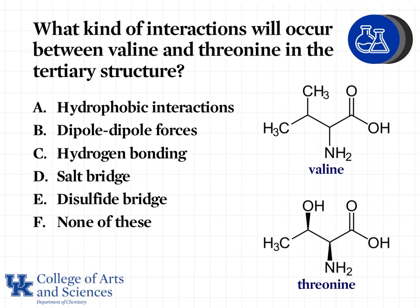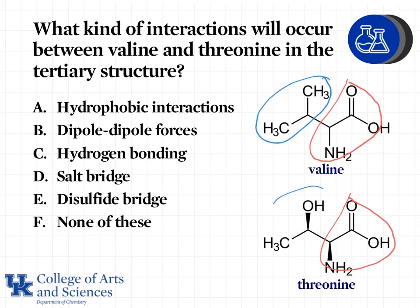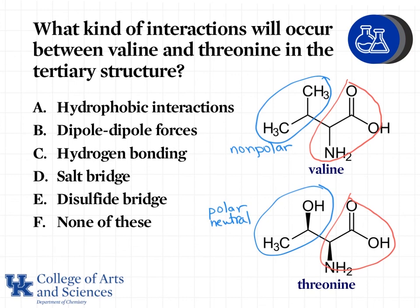Another example: what kind of interactions will occur between valine and threonine? Let's look for our backbones and then identify the side chains. Valine has a nonpolar side chain, and threonine has a polar neutral side chain. These are very different from one another, and as a result, we're not going to see interactions occurring between them. The correct answer here is actually none of these.